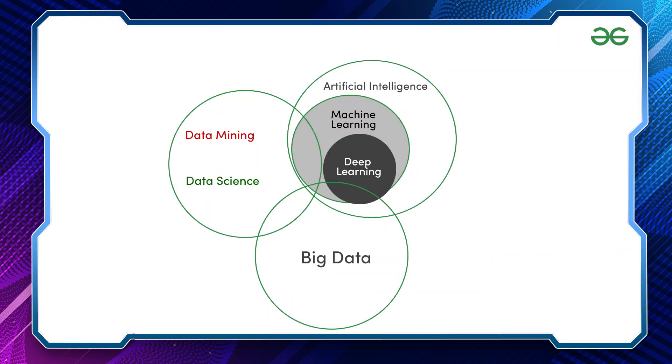Data science is like an umbrella under which machine learning takes shelter. Data science uses machine learning algorithms, artificial intelligence, and deep learning to solve business problems. Now, talking about average salaries, it depends on factors like the type of company, roles and responsibilities, and years of experience. But in most cases, a machine learning engineer gets a higher salary than a data scientist.